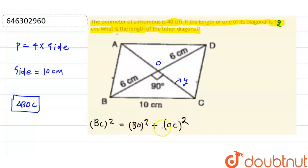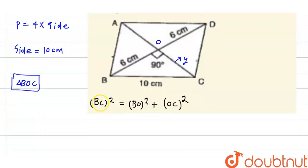So, BC square is equal to BO square plus OC square. Basically, we need to find this thing. So, 100 is equal to 36 plus OC square. So, OC is equal to 100 minus 36. That is 64. And the root of 64 is 8 cm.